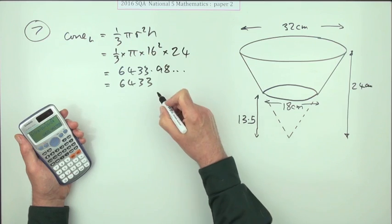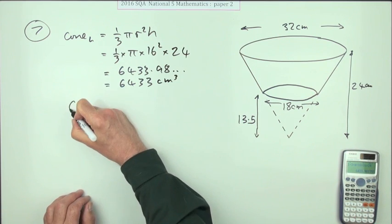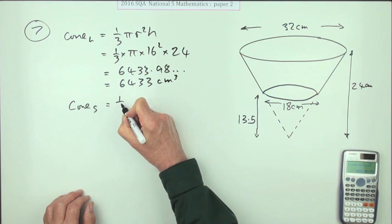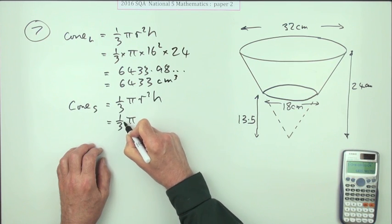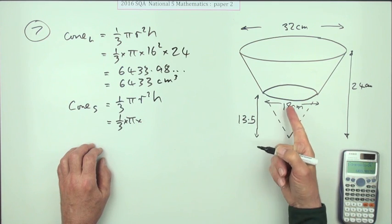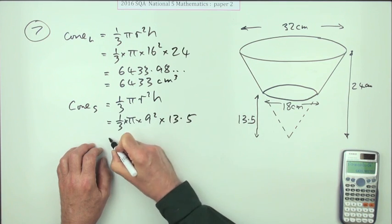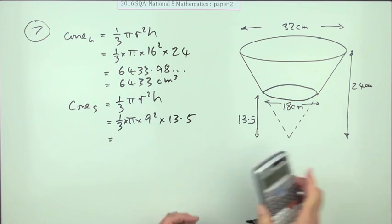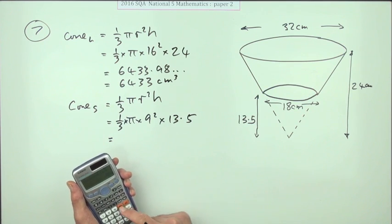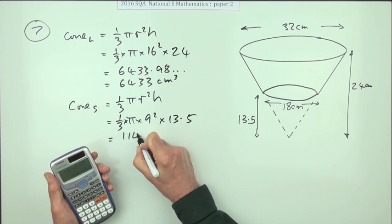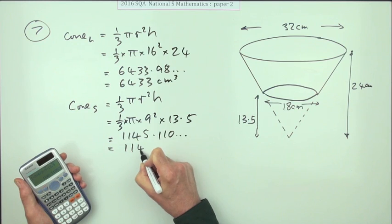Now there's the small cone that's also a third of pi r squared h. A third times pi times, but this time the radius is just nine, nine squared times 12.5. Just press the buttons again, and you get after pressing it one more time, 1145.110 and so on. I'll just take that to 1145.